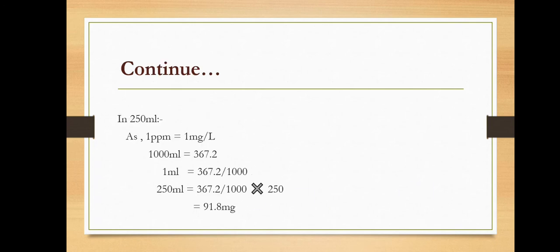And in 250 ml, as 1 ppm equals 1 mg per liter, and 1000 ml equals 367.2 mg, to calculate for 1 ml, we divide 367.2 by 1000.